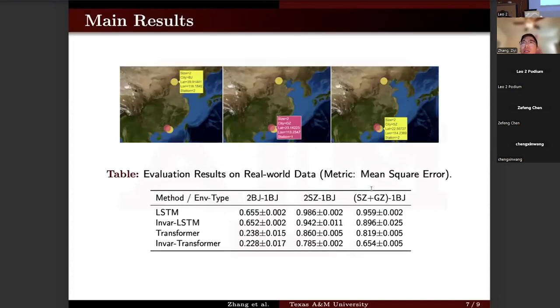Then switch to the real-world application. We used the training data from Beijing. When compared with standard time series model, there is an improvement, which means that even in the same city, there exists a geographical domain shift.